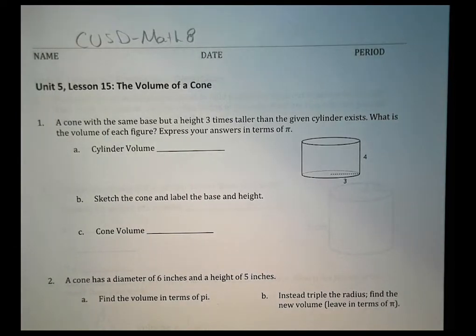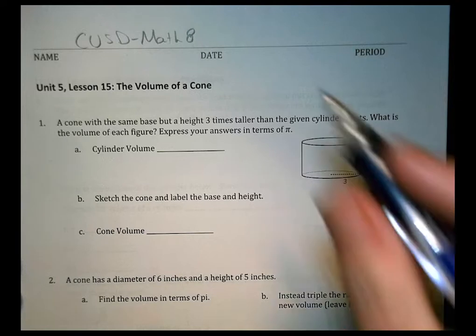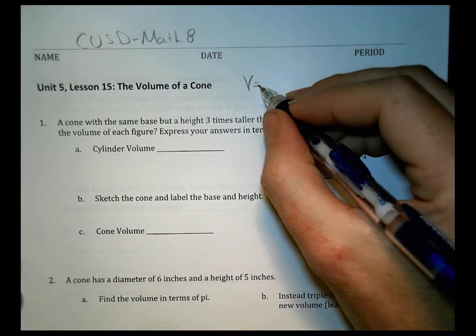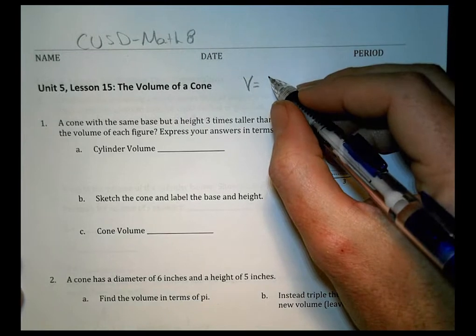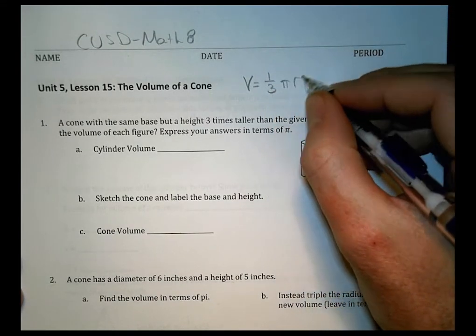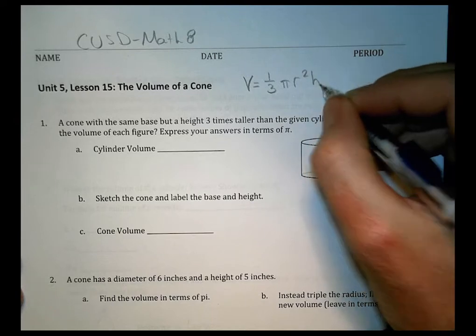Hi, this is Math 8 Unified Lesson 15 called the volume of a cone. Alright, so today you worked on the volume of the cone. And one thing you found at the end was there is a formula for that. Volume of a cone is going to be equal to 1/3 pi r squared times the height.